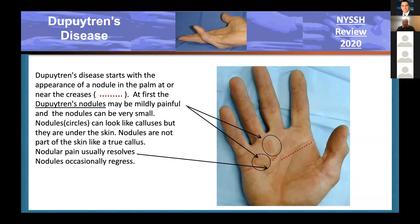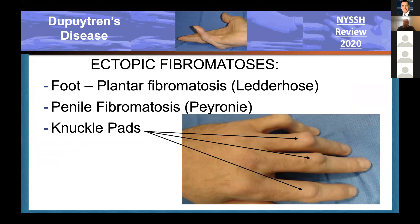Dupuytren's disease starts out in the palm as a little nodule near the distal palmar crease. The nodules may be mildly painful in the beginning and very small. They can enlarge and kind of look like calluses, but they're underneath the skin in the subcutaneous tissue. Often the pain can resolve, so going after them initially because they hurt is not appropriate. Occasionally, a nodule will regress and not turn into a Dupuytren's cord.